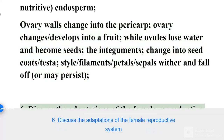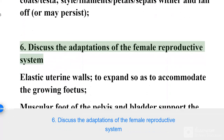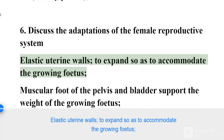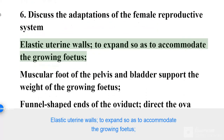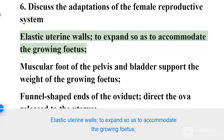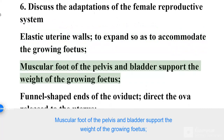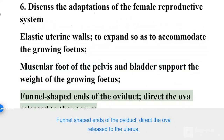Discuss the adaptations of the female reproductive system. Elastic uterine walls expand to accommodate the growing fetus. Muscular floor of the pelvis and bladder support the weight of the growing fetus. Funnel-shaped ends of the oviduct direct the ovum released to the uterus.